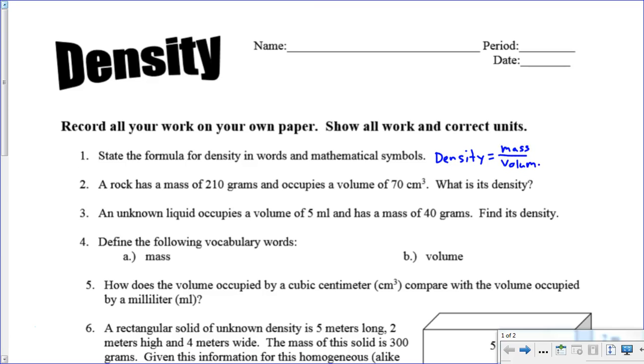I use in my class something called an algebra circle and this is how it works. We write in the right places density, mass, and volume. Then you cover up the thing that you want to solve for. If we cover up density, you have m over v, mass over volume. If we covered up the volume, we would have mass over density. If you cover up the m, it's density times volume.